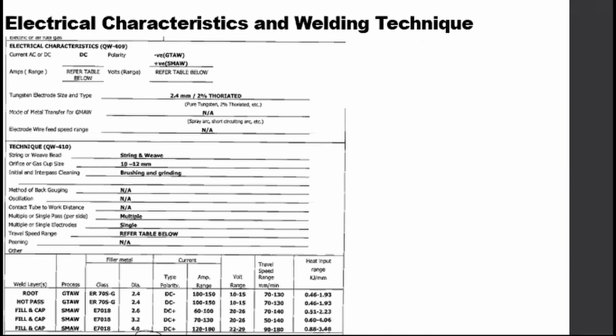The WPS also indicates the electrical characteristics for the welding machine and welder technique. Some welding processes and their electrodes prefer DC or AC. DC can be further classified into DCEN — DC electrode negative, or straight polarity — and DCEP — DC electrode positive, or reverse polarity. SMAW or stick welding normally follows DCEP, and GTAW or gas tungsten arc welding normally follows DCEN, though some electrodes can be used for both AC and DC.